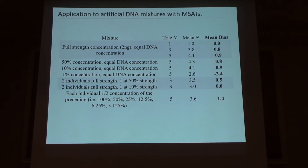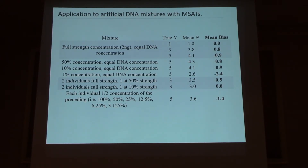When we get to one one-hundredth of concentration, we start to see downward bias — so there is going to be a lower limit to the amount of DNA we can detect, which we'd expect with any type of genotyping or eDNA sampling. Finally, thinking about how we experience mixtures in the environment, it's unlikely that all specimens contribute the same amount of DNA, so we looked at asymmetric concentrations. We get good performance until you get individuals with very tiny amounts of DNA, then they start to drop out of the mixture. But all in all, pretty robust.